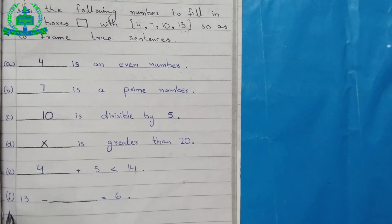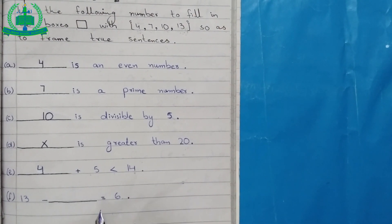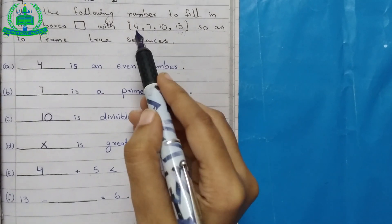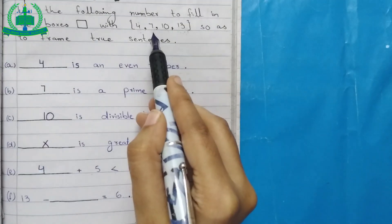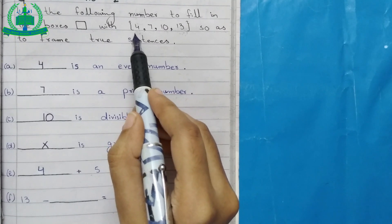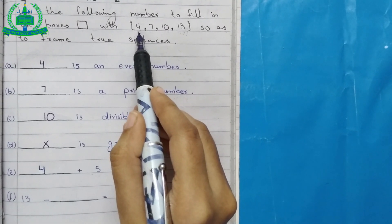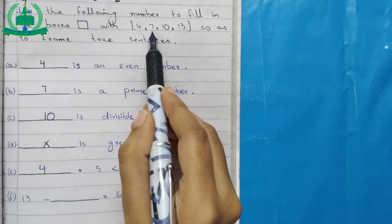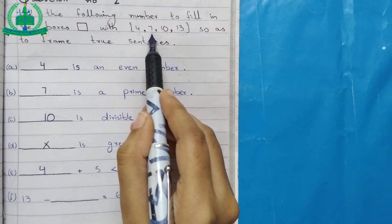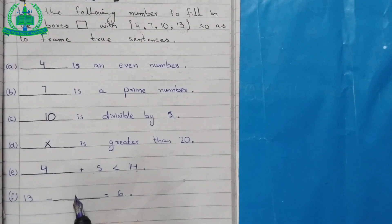F: 13 minus dash equals 6. From the options 4, 7, 10, 13 — 13 minus 4 equals 9, which is incorrect. 13 minus 7 equals 6. So we write 7.